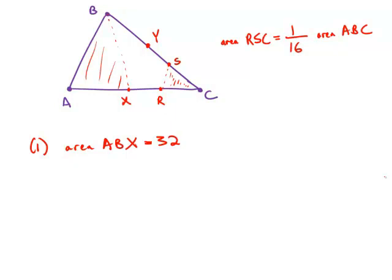So if the area of ABX is 32, the area of ABC is twice that, 64. From there, we can figure out the area of RCS. So statement number one is perfectly sufficient.